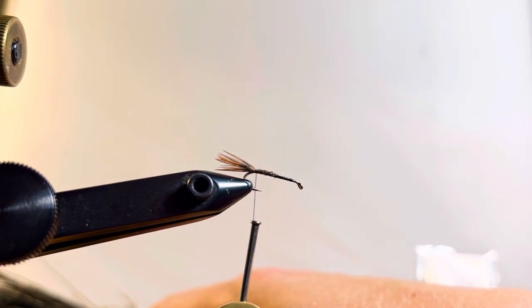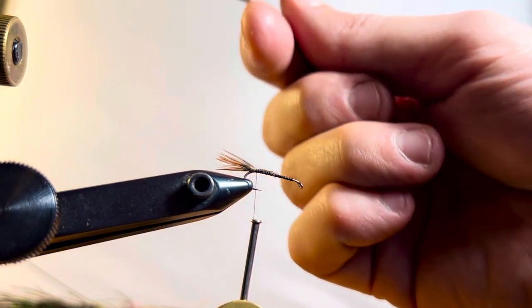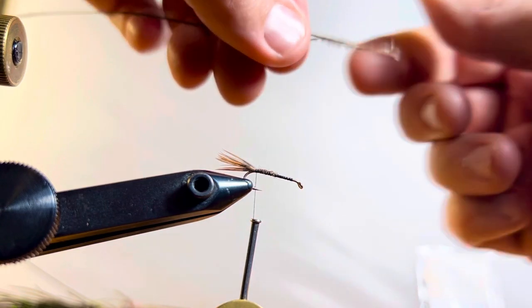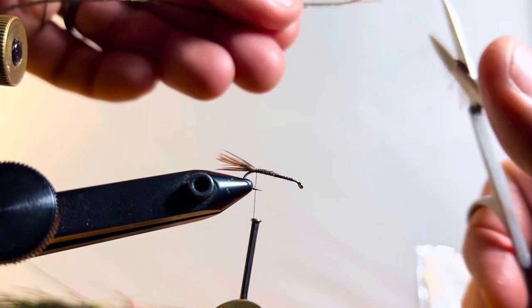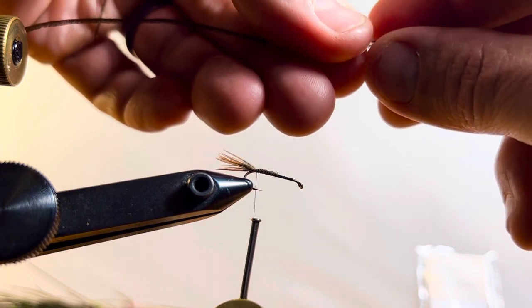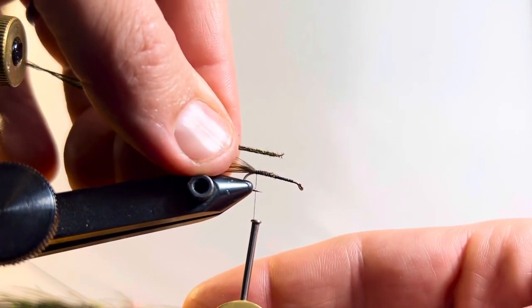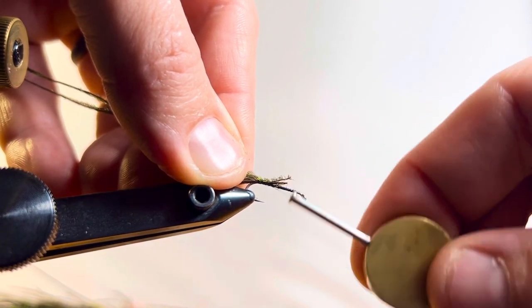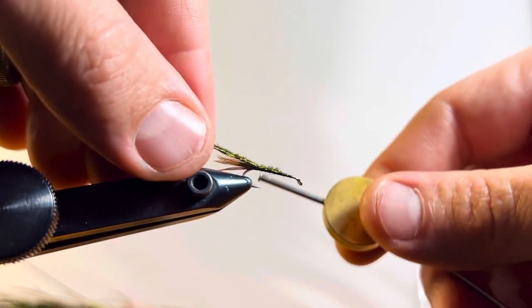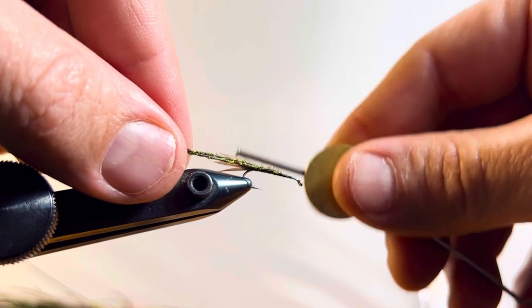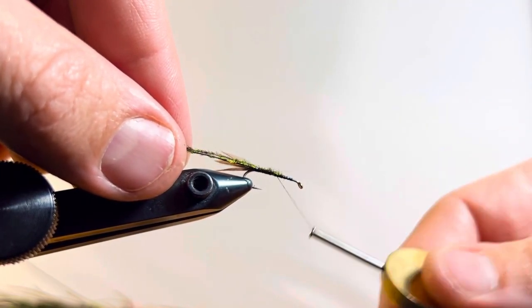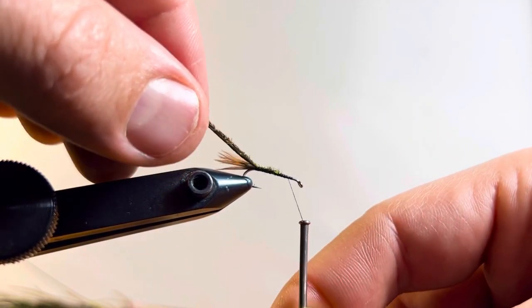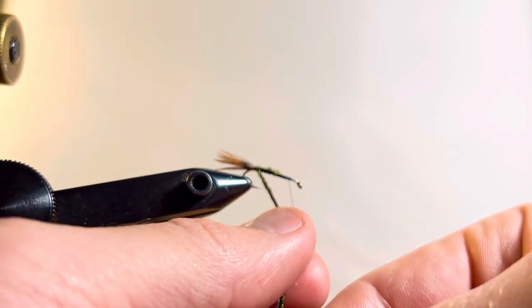We're going to take two peacock herls and they are going to form our body. So I like to grab two longer ones. Easier to control. Take our scissors and trim it off nice and even there. So we got two that we can lock in. We're going to tie that down right here. All the way up. All the way back. And up once more. To right about there. About a hook eye and a half back from our hook eye's position.